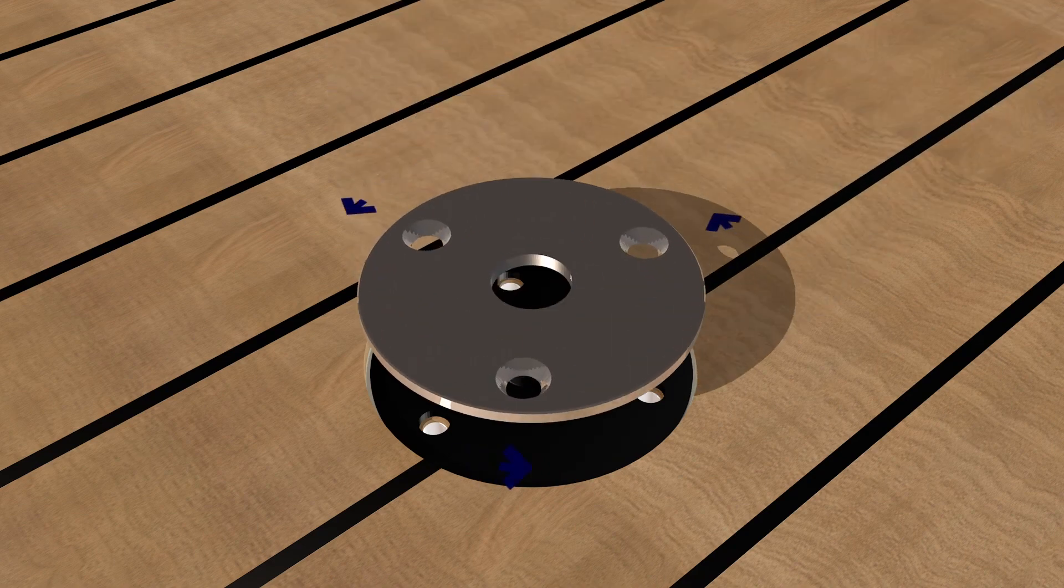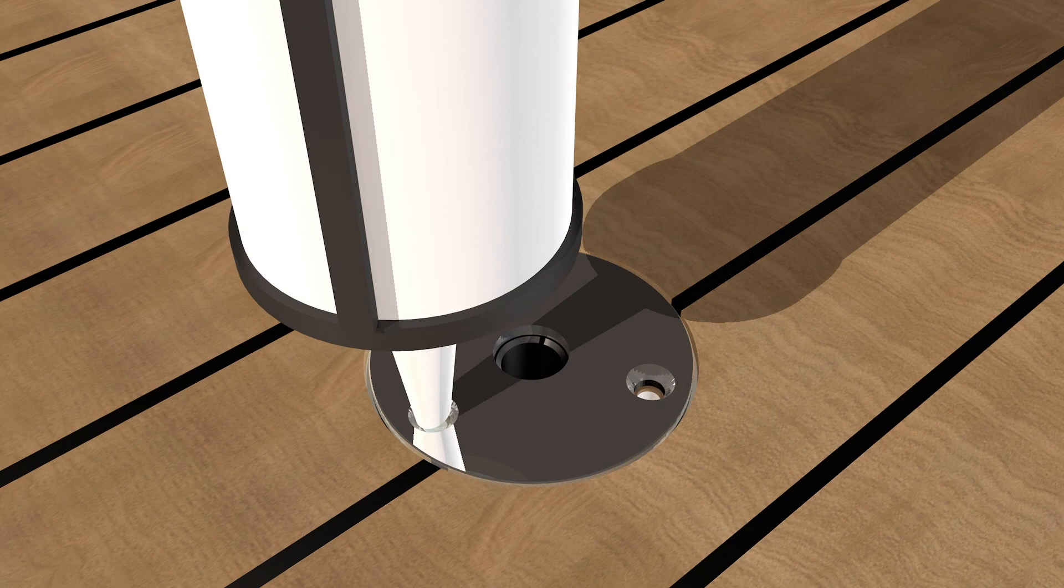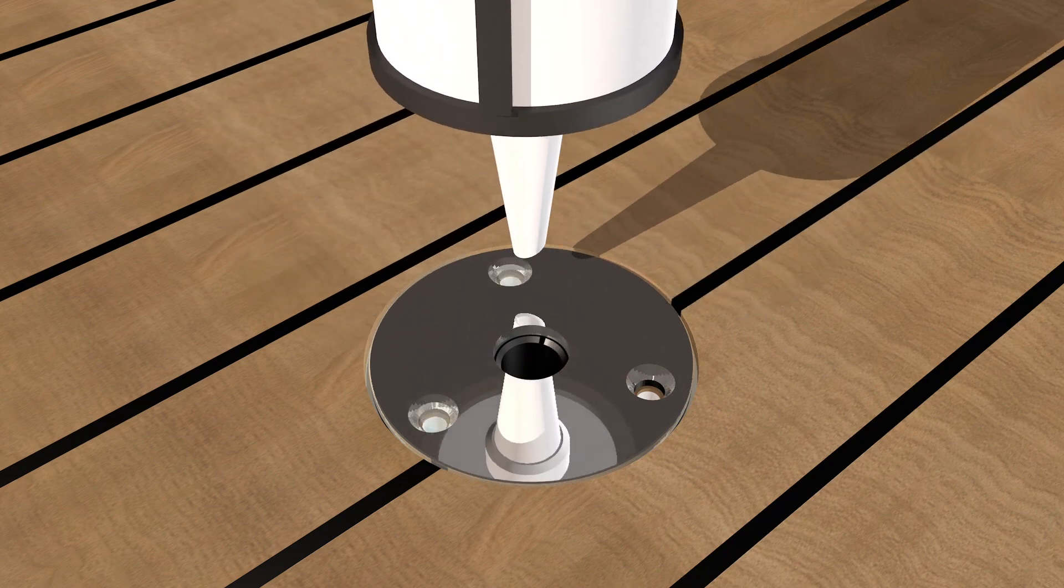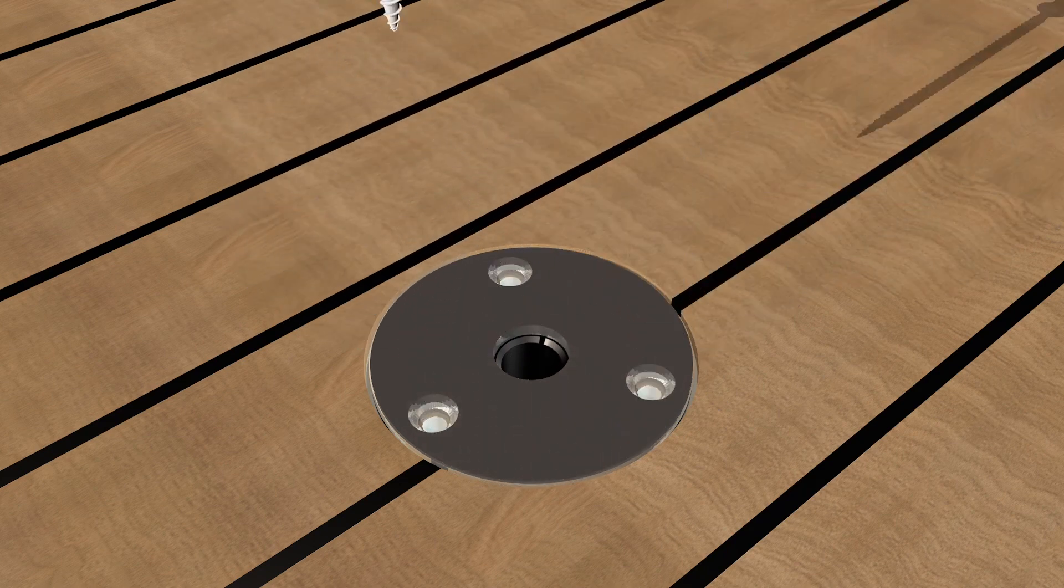Align the screw holes before you place the deck plate into the deck. Squeeze a little mastic into each screw hole as sealant and then fix into place using the provided screws.